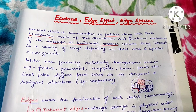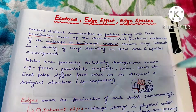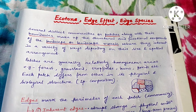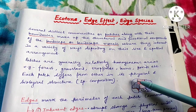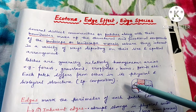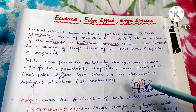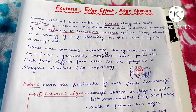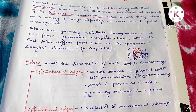Now, what is an edge? Edge is nothing but the perimeter of each patch. The boundary line of each patch is known as an edge. Edges mark the perimeter of each patch or community.